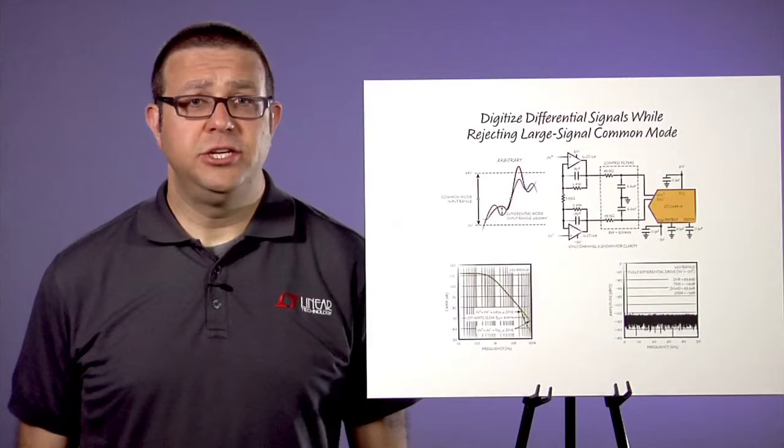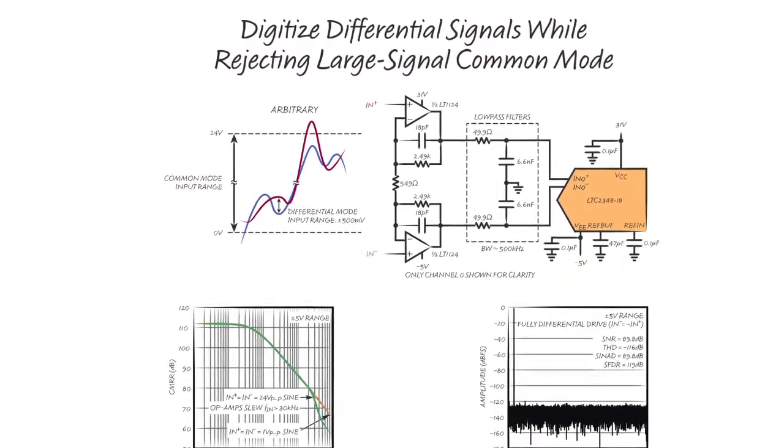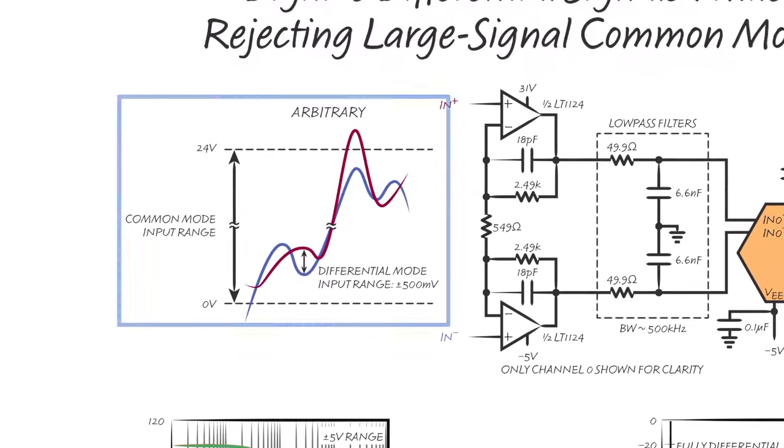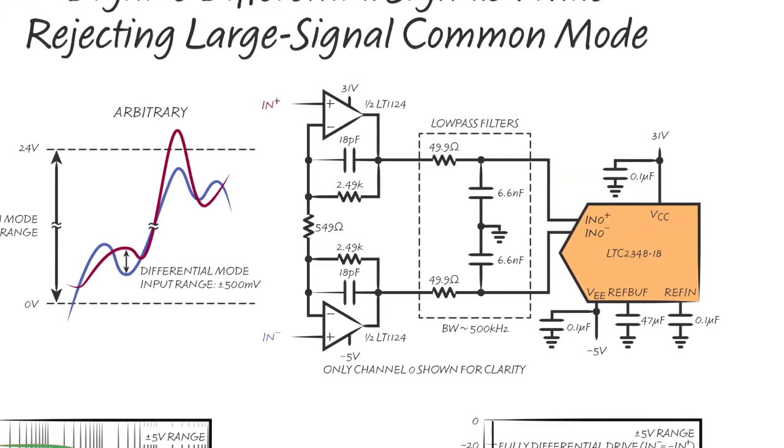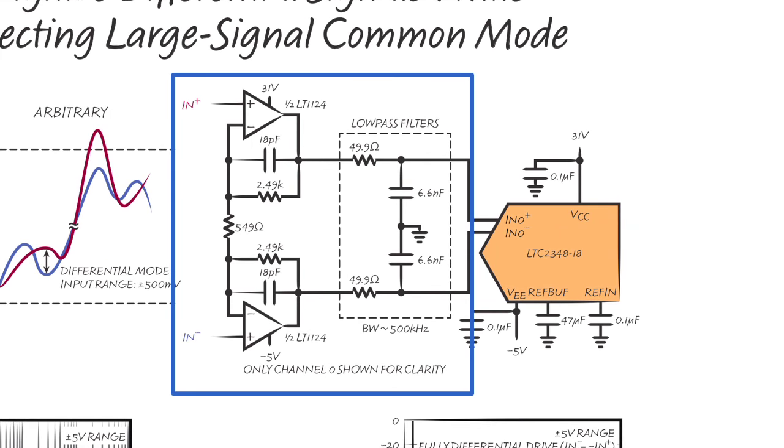This next application solution digitizes a small plus or minus 500 millivolt differential sensor signal riding on top of a large 0 to 24 volt common mode interference. A differential gain of 10 stage amplifies the sensor swing to plus or minus 5 volts at the converter inputs for improved SNR, but passes the common mode signal one for one.